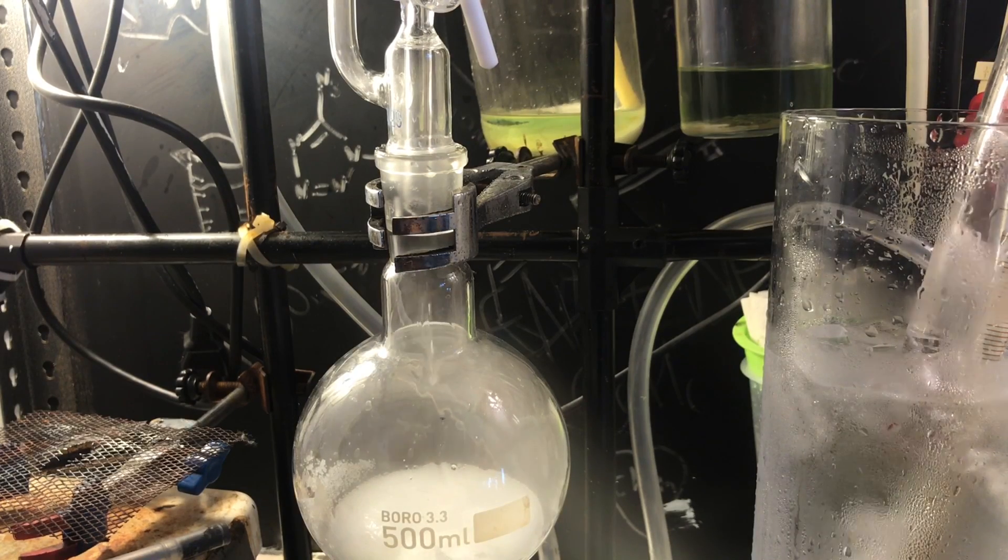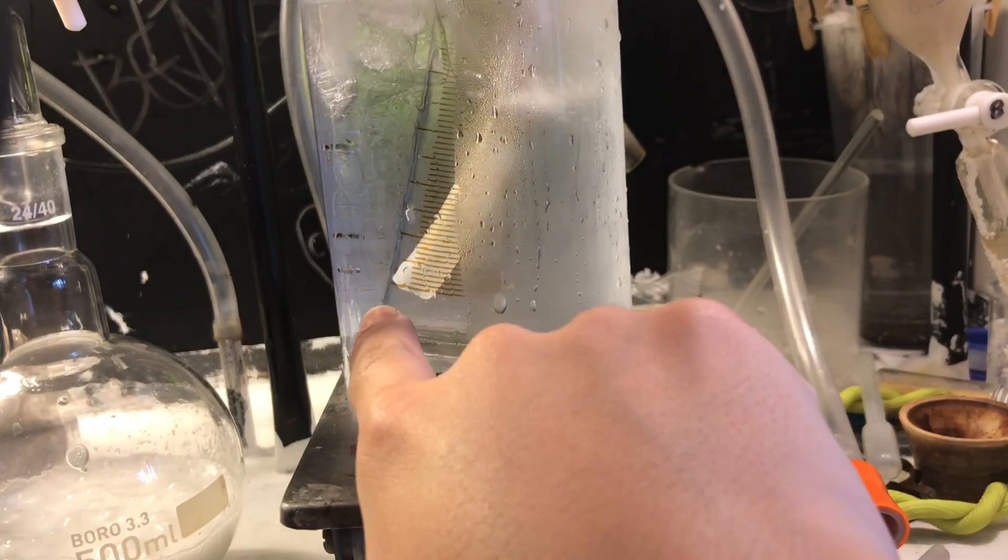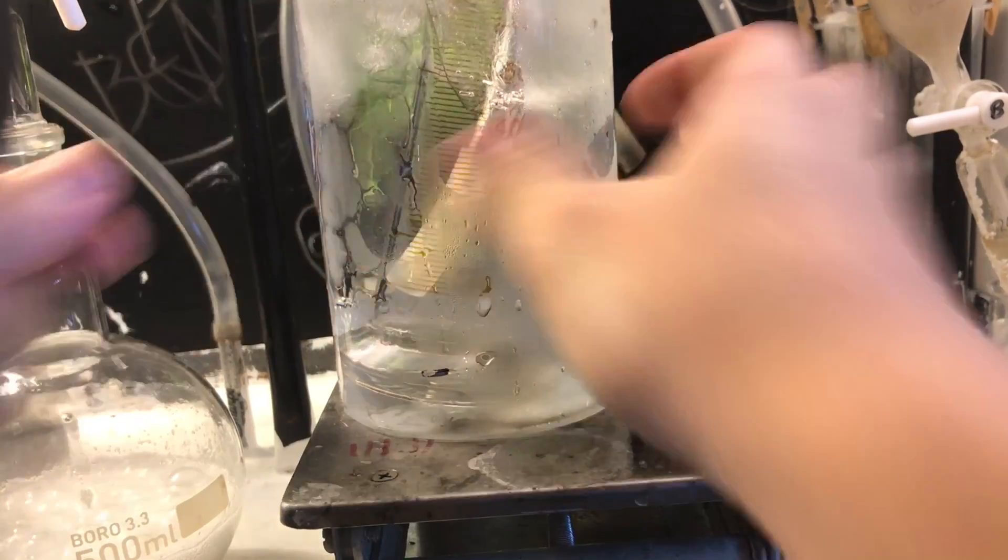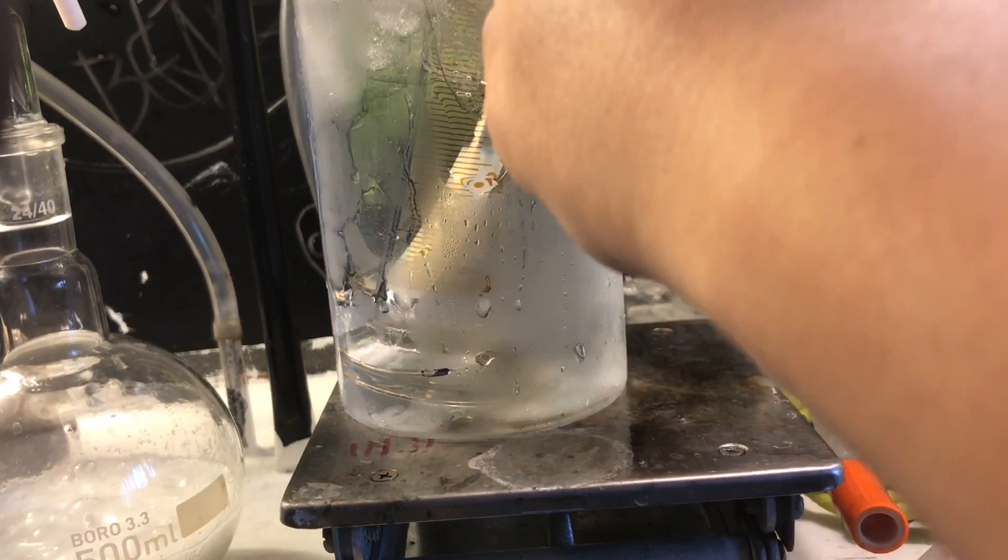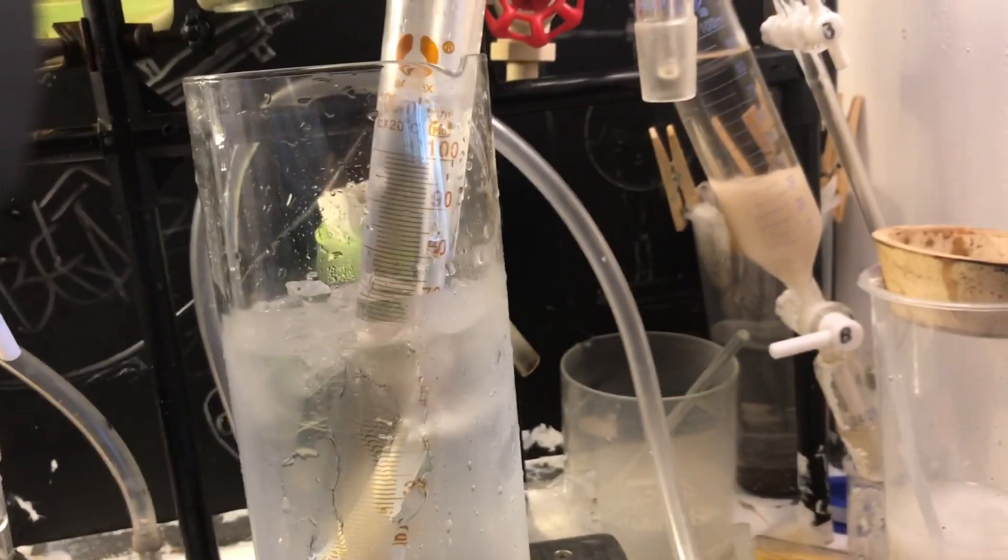You can see we get a mist of HCl gas, and that's due to water. Once the air is purged out, you see the bubbles start dissolving into ice water, and that's our hydrochloric acid forming. Basically, it's the HCl dissolving.